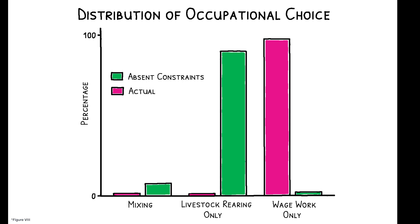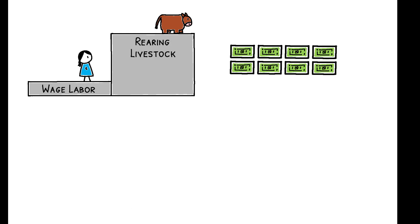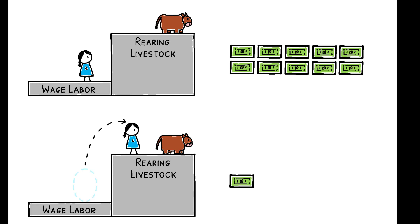Credit constraints prevent the poor from adopting the occupation where they would be most productive, and in monetary terms, the resulting misallocation is an order of magnitude larger than the one-off cost of moving households over the poverty threshold.